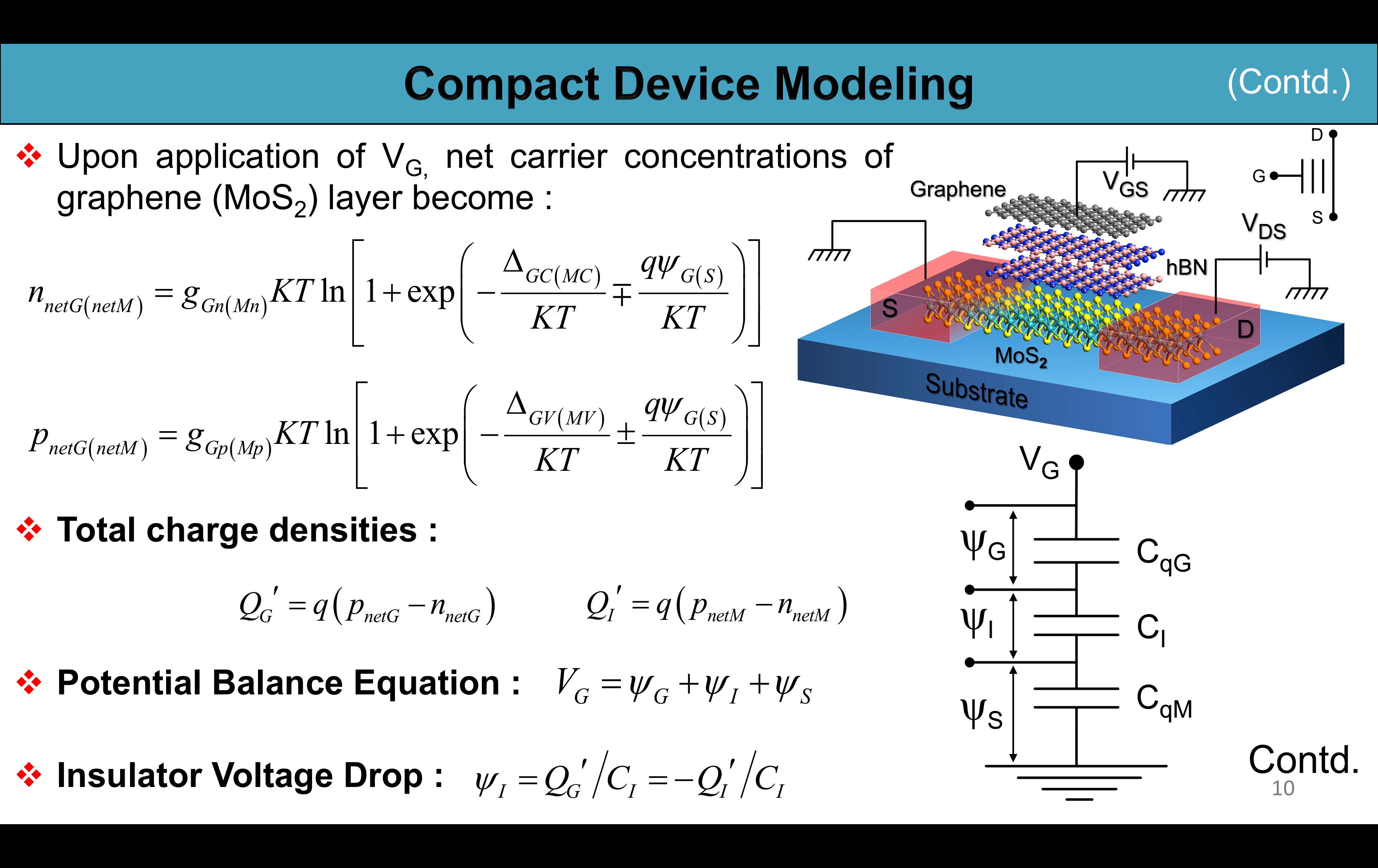Upon application of gate voltage the net charge carrier concentration in the graphene and MoS2 layers are shown via these equations. On the right hand side there is the schematic diagram of the van der Waals structure based MISFET, and on the inset there is the coined device symbol.